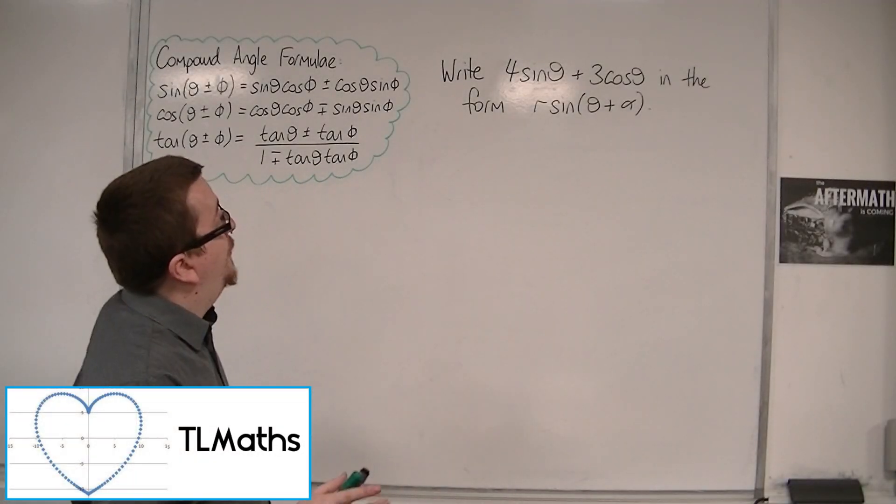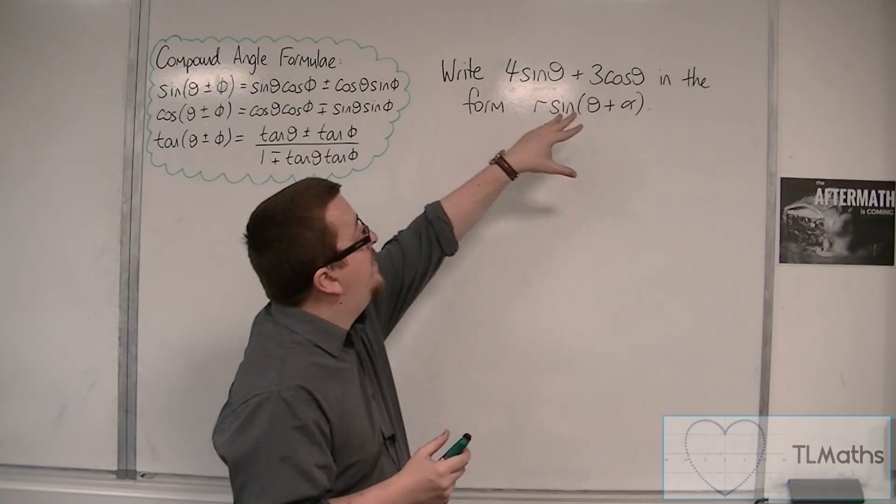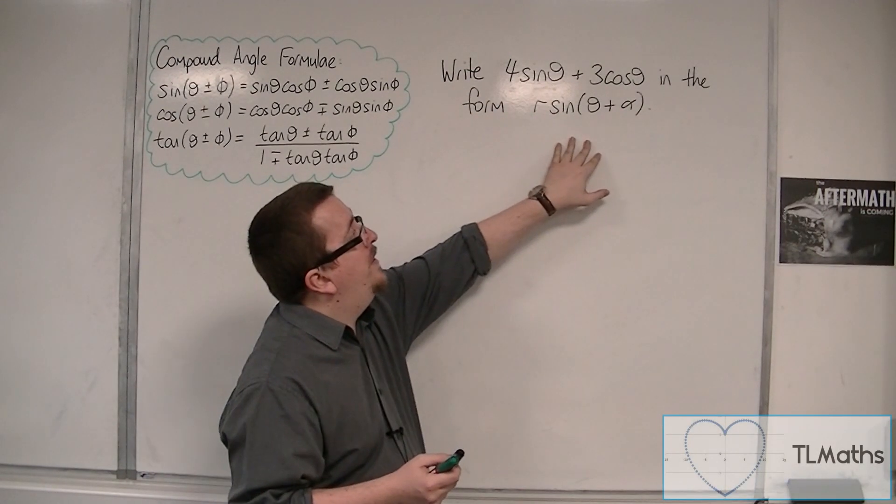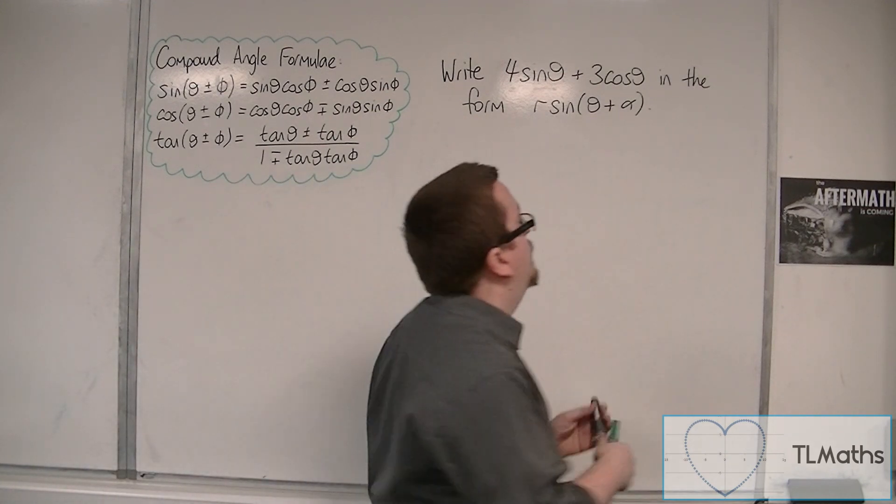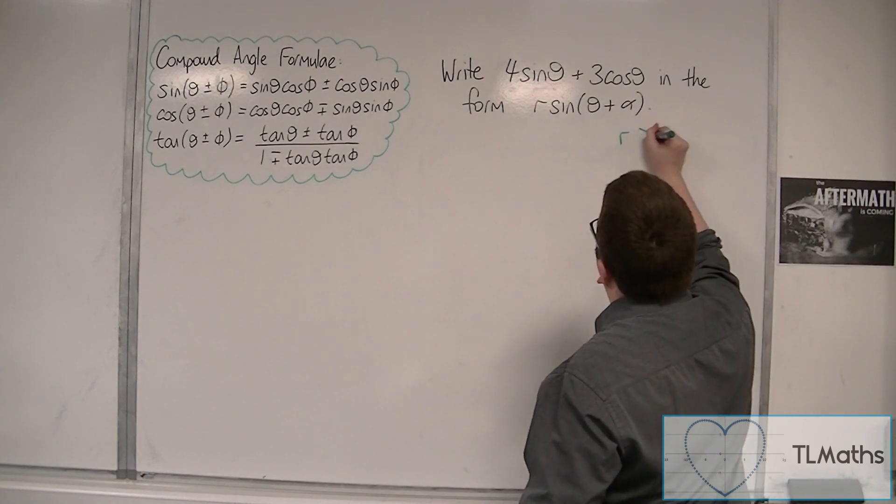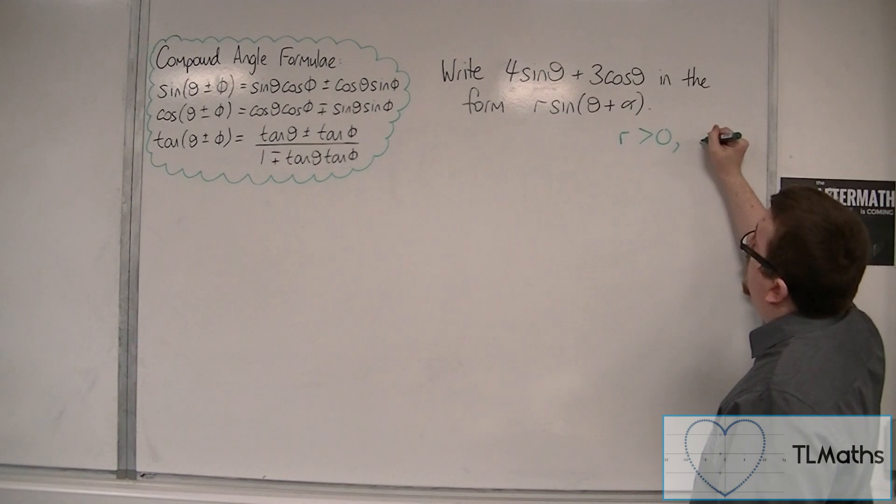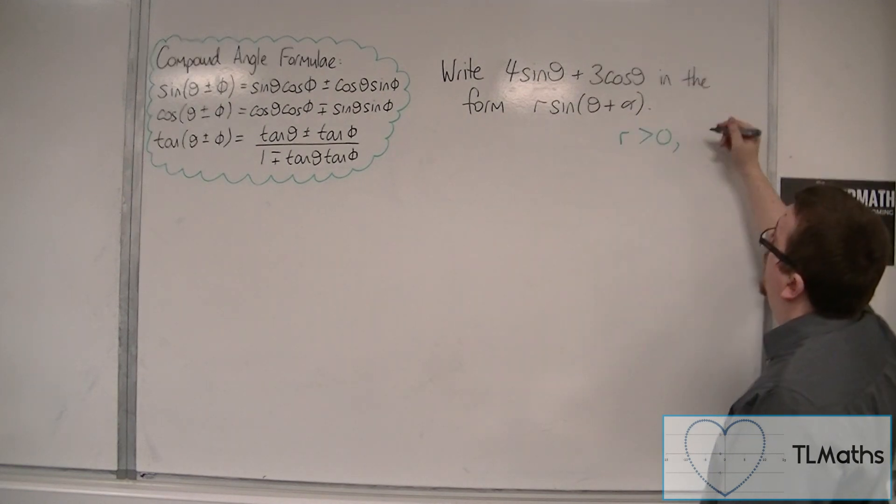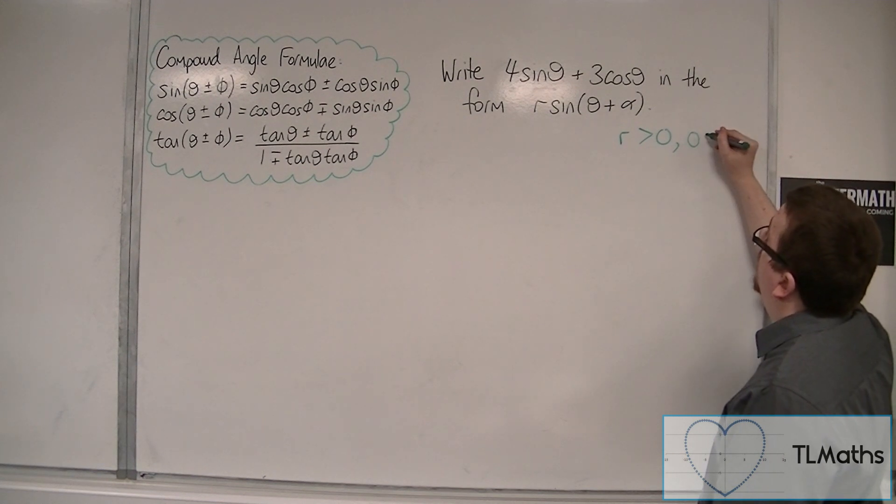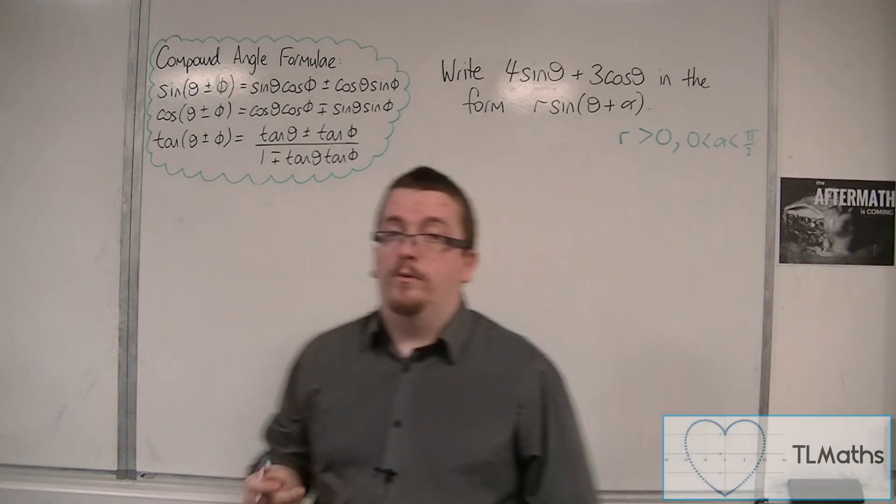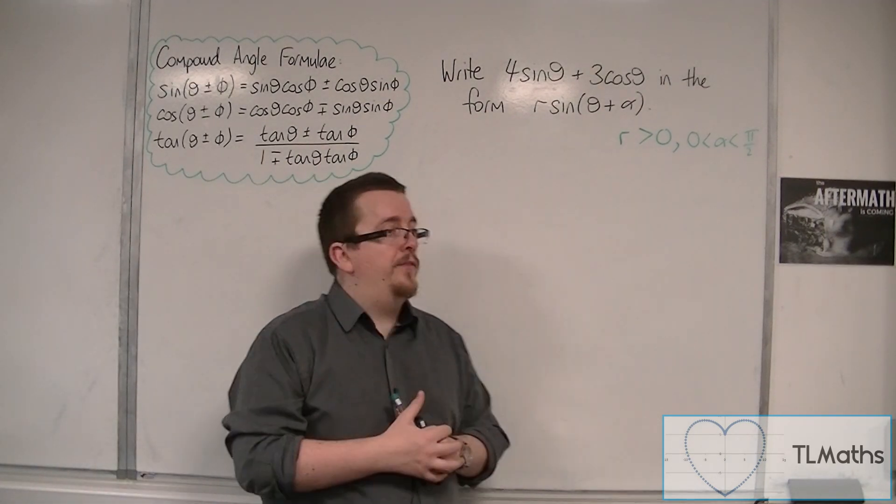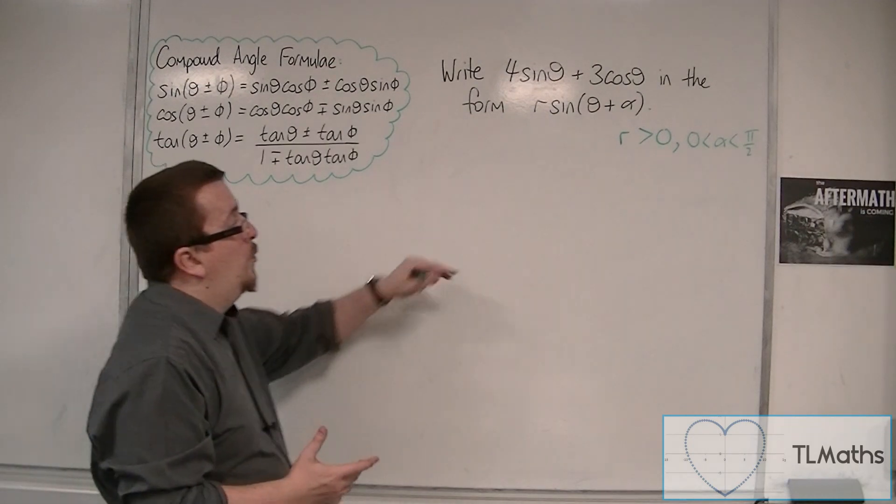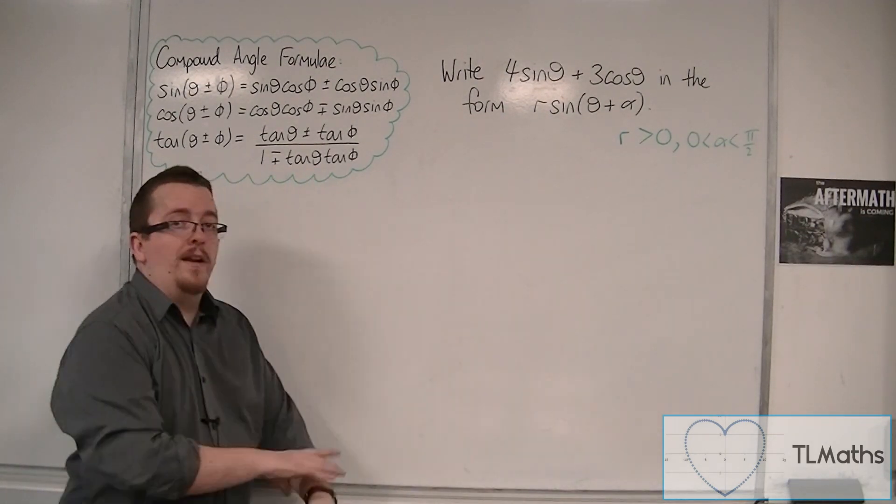In this video we are going to go through the process of writing 4 sin theta plus 3 cos theta in the form R sin theta plus alpha. Now there's a couple of restrictions before I start. Usually R is taken to be positive and alpha is taken to be acute, so alpha is going to be between 0 and pi over 2 or 90 degrees. Let's say we want alpha to be in radians for this one. Now this isn't always the case, but traditionally that's what we look for.